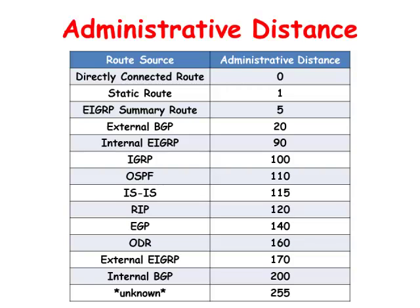This is a list of the default administrative distance of the protocols supported by Cisco routers. Directly connected interfaces have an administrative distance of 0 because the path is directly connected to the desired network — the protocol does not even have to guess if the path leads to the network. Static routes have an administrative distance of 1 because this is a path that the network administrator specifically configured the packets to go. The other protocols were given their default values for other various reasons.